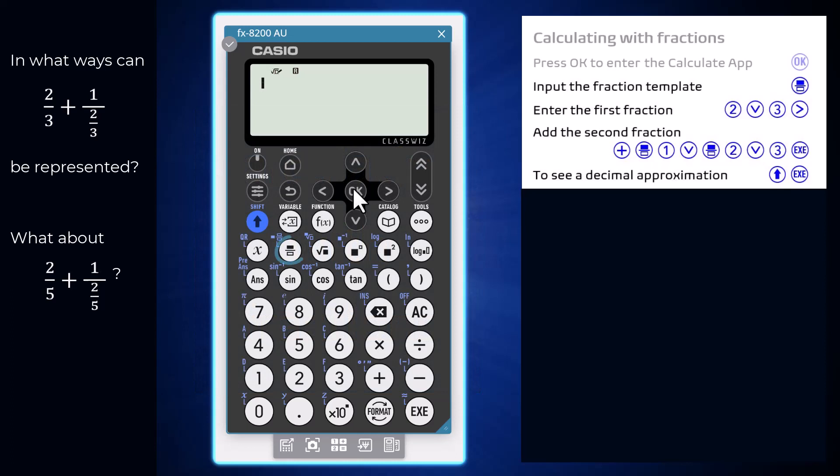The fraction key can be used to input a template that allows fractional expressions to be entered just as they appear when written mathematically. Press the fraction key, enter the numerator of 2 and then arrow down to enter the denominator of 3. Now arrow right, moving the cursor so that the next fraction can be added.